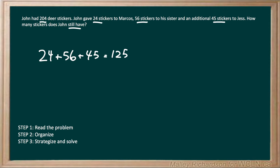Now we have to find out how many stickers does John still have after giving away all these stickers. We're going to take the original number of stickers that John had, which was 204, and subtract the number that he gave away. He gave away 125 stickers, so we're going to subtract 125 stickers. 204 minus 125 gives us 79 stickers that he has left.